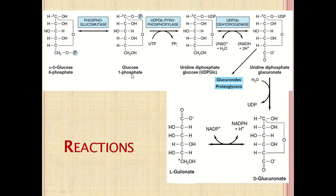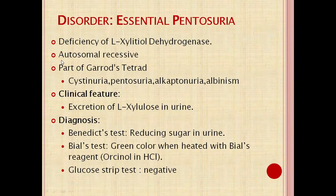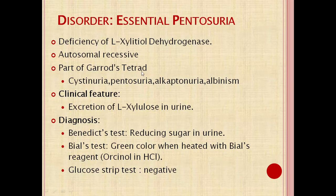So the glucuronic acid pathway is mainly utilized for the synthesis of UDP glucose, UDP glucuronic acid, and xylulose pentose sugar. The disorder related to the uronic acid pathway is essential pentosuria — an autosomal recessive condition due to deficiency of xylitol dehydrogenase enzyme, required for conversion of xylulose to xylitol, causing xylulose to be excreted in the urine. It is part of Garrod's tetrad, which includes cystinuria, pentosuria, alkaptonuria, and albinism.